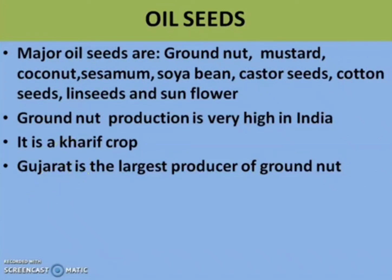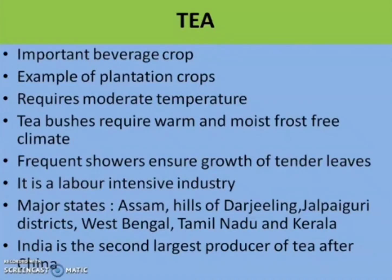The next crop is tea. Tea is an important beverage crop and an example of a plantation crop. It was introduced by the British in India. It requires moderate temperature; tea bushes require a warm and moist frost-free climate. Frequent showers of rain are enough for the growth of tender leaves. It is a labor-intensive industry. The major states are Assam, Darjeeling and Jalpaiguri districts of West Bengal, Tamil Nadu and Kerala. India is the second largest producer of tea after China.